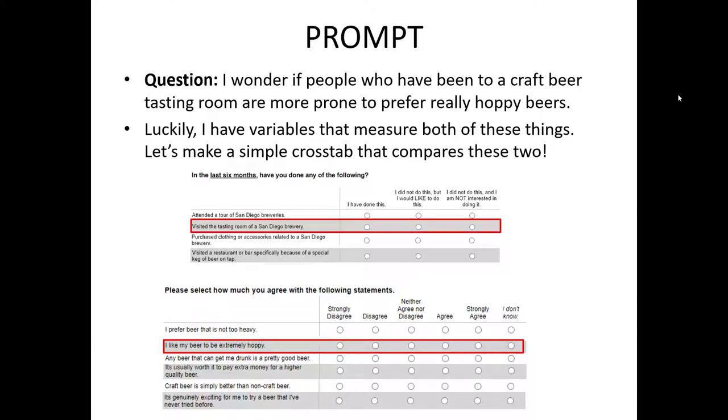We have a question that asks people about whether or not they have visited a tasting room of a San Diego brewery. Not only does it tell us if they have done it, but whether or not, if they haven't, if they'd like to do it or not. In addition, we also have a Likert scale question with an I don't know option to the statement, I like my beer to be extremely hoppy. We can clearly use these two variables to investigate this question.